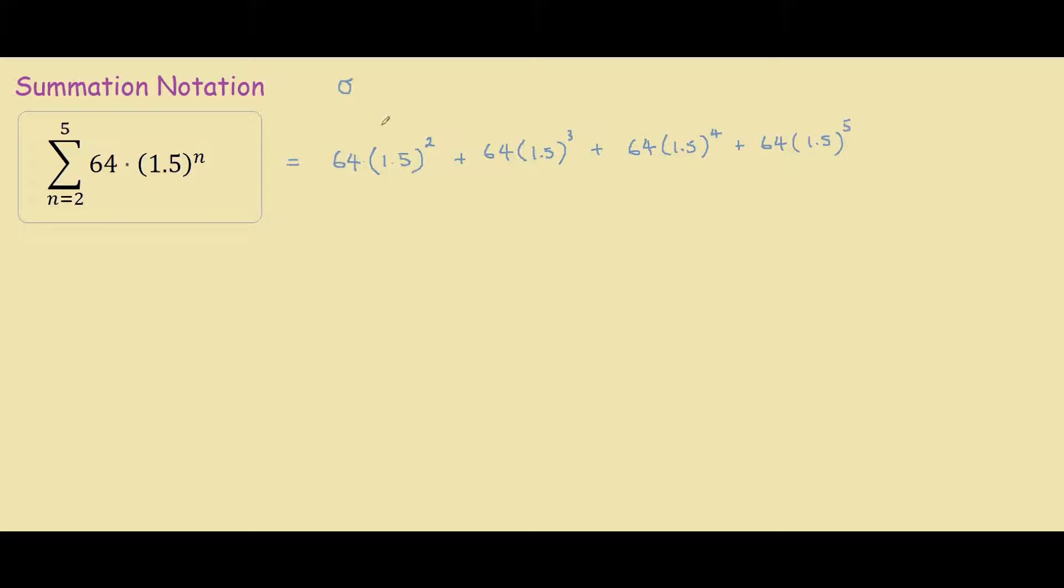So in this case we have 2 here, then it goes to 5, so plus 1 gives 3, 4, 5. If this was 1, it would be an extra term of 1 here, then plus 2, 3, 4, 5.